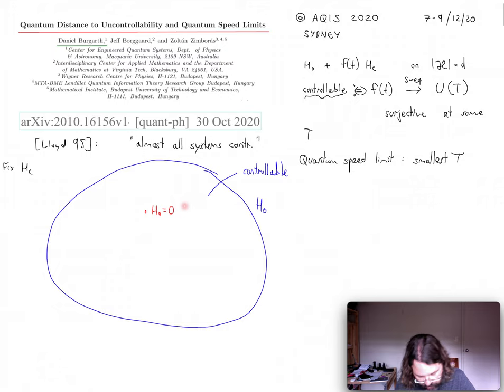So this will be an uncontrollable point, and there can be more than one, there can be many, but they will always have, roughly speaking, zero measure. So you can also have more complicated manifolds which are uncontrollable. So all of these systems are uncontrollable, but they are rare.